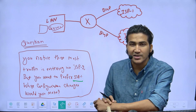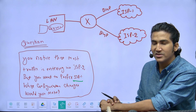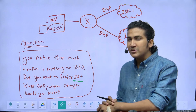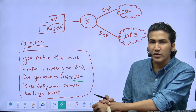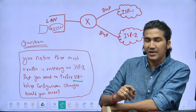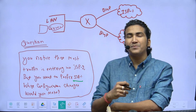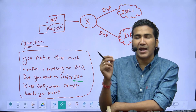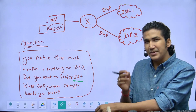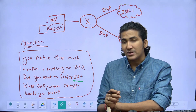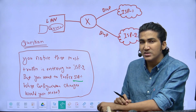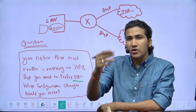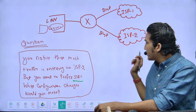If you know the answer, please let me know in the comment section. If you don't, watch till the end. We need to influence BGP routes. For path manipulation in BGP we use BGP attributes, but which attribute to use depends on whether you are influencing inbound or outbound traffic.